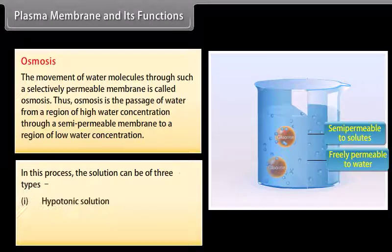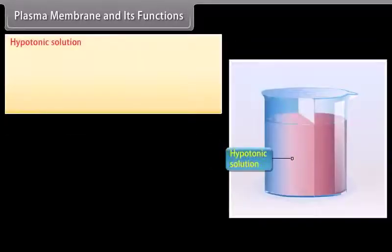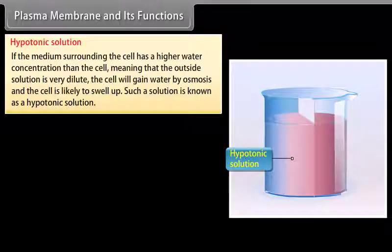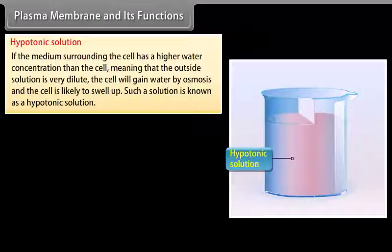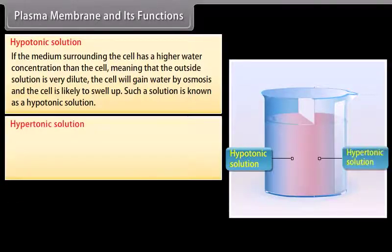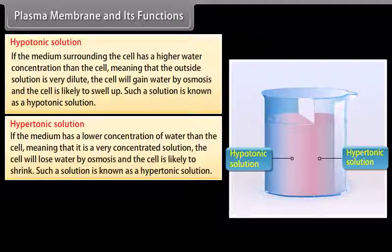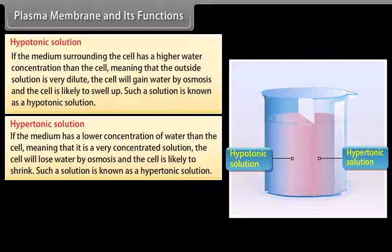In this process the solution can be of three types: hypotonic, isotonic, or hypertonic. Hypotonic solution: if the medium surrounding the cell has a higher water concentration than the cell — meaning the outside solution is very dilute — the cell will gain water by osmosis and is likely to swell up. Hypertonic solution: if the medium has a lower concentration of water than the cell — meaning it is a very concentrated solution — the cell will lose water by osmosis and is likely to shrink.